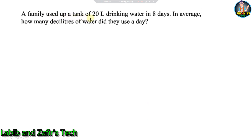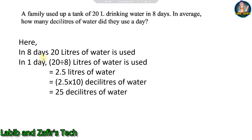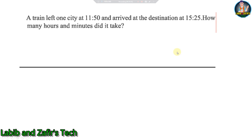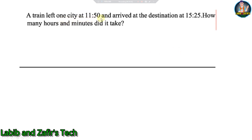Next problem: A family used up a tank of 20 liters of drinking water in 8 days. On average, how many deciliters of water did they use per day? Solution: In 8 days, 20 liters used, so in one day: 20 ÷ 8 = 2.5 liters. Since 1 liter = 10 deciliters, 2.5 liters = 2.5 × 10 = 25 deciliters of water per day.